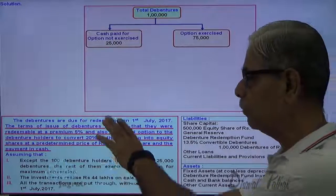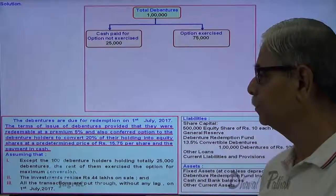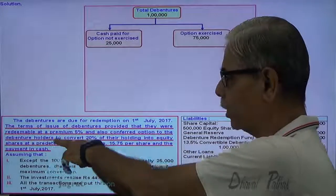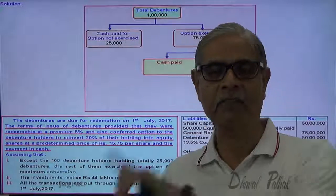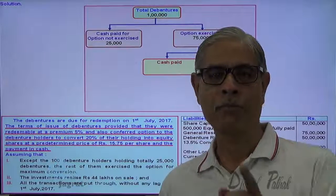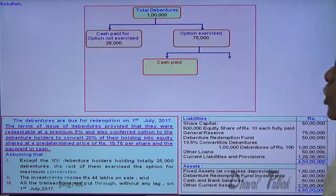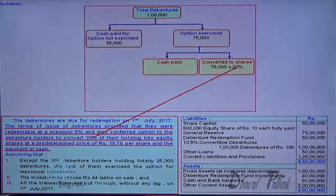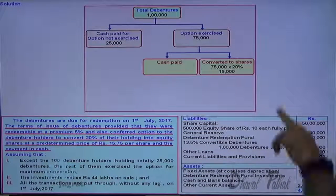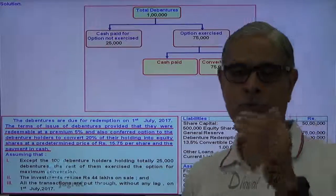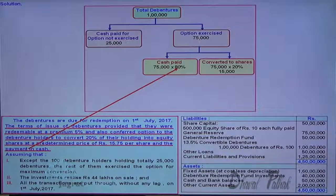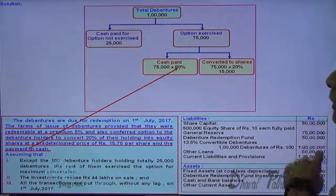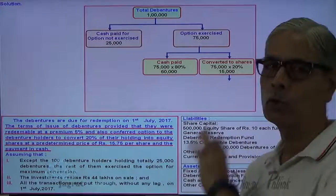Now, when they exercise the option, the debenture holders convert 20% of their holding into equity shares. So for 20% of the holding, equity shares will be paid, and for the remaining 80%, cash will be paid. So 75,000 into 20% gives 15,000 debentures converted into equity shares, and 75,000 into 80% gives 60,000 debentures for which cash is to be paid.